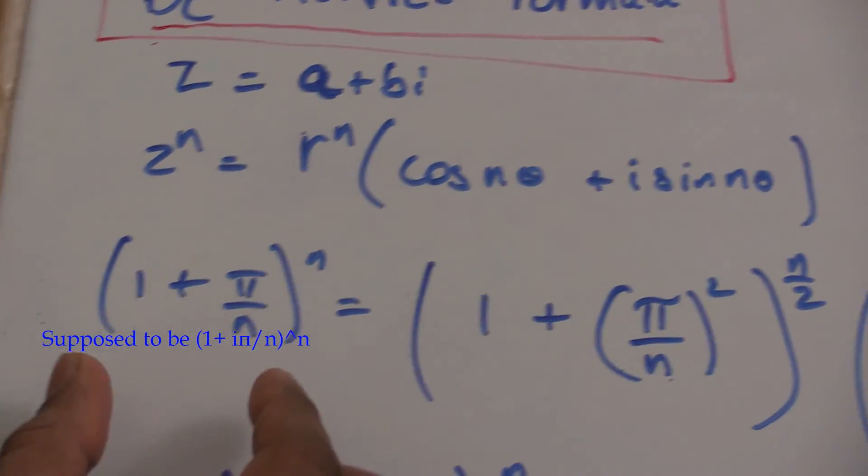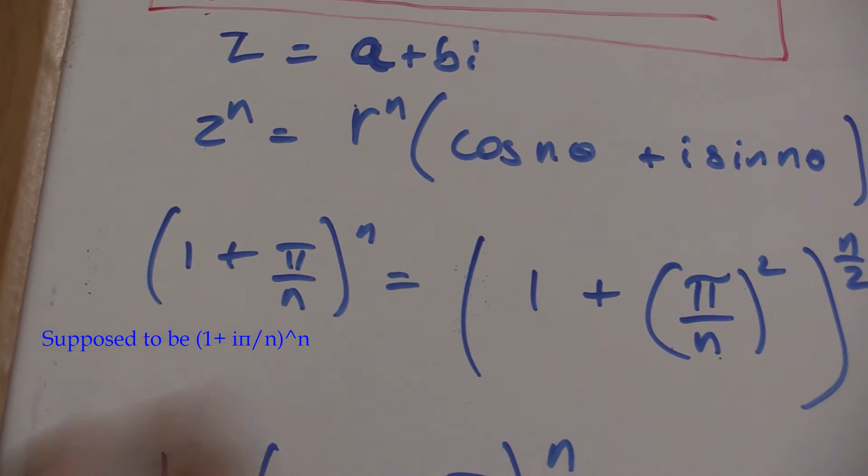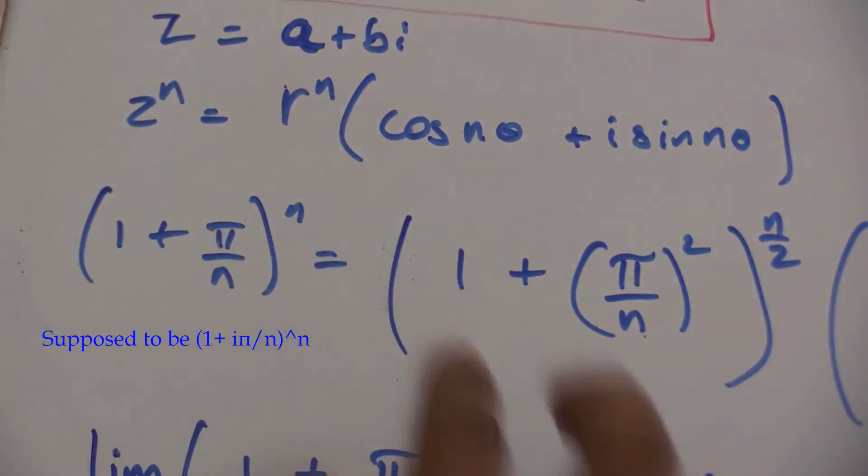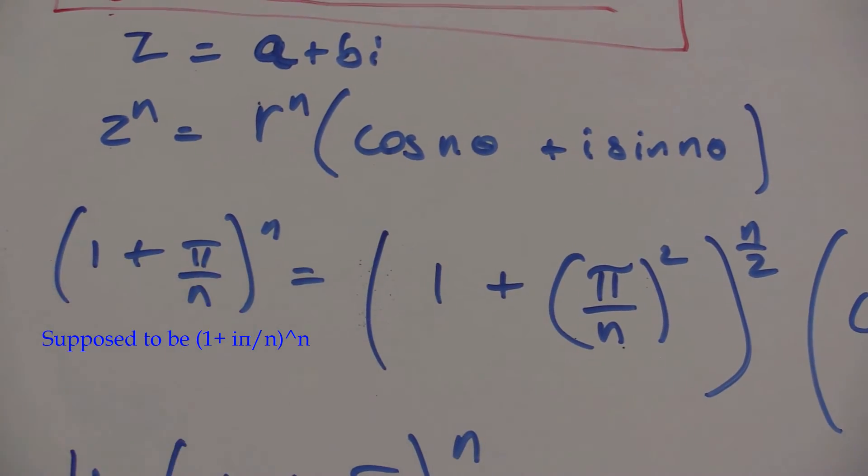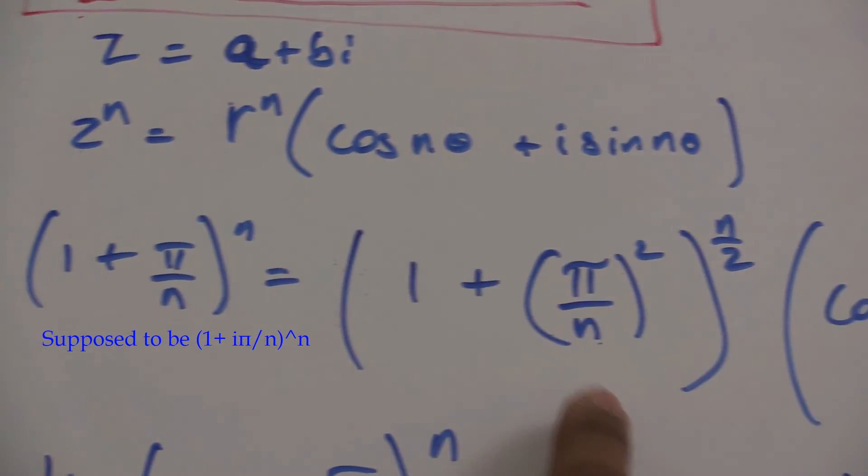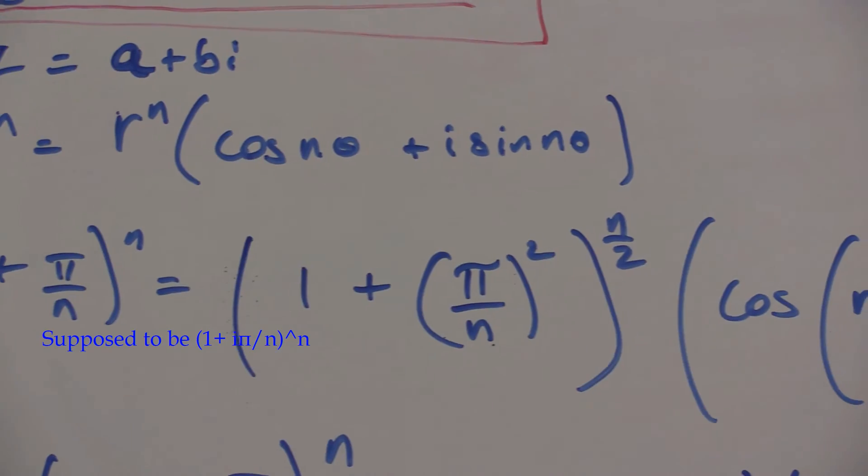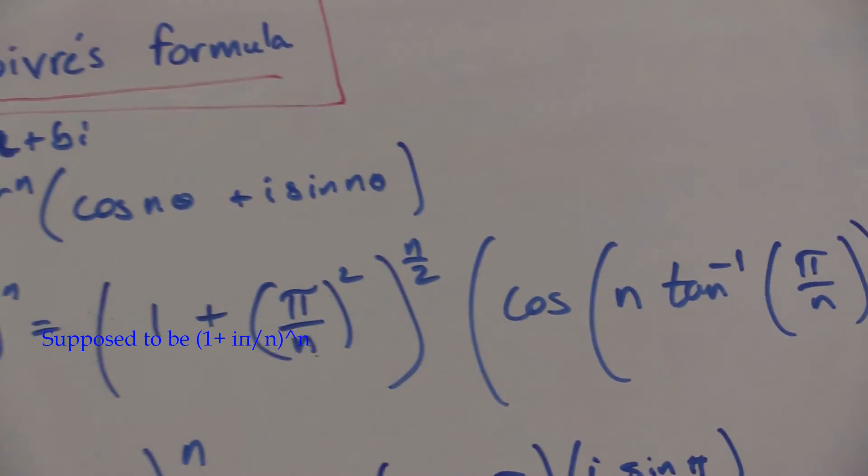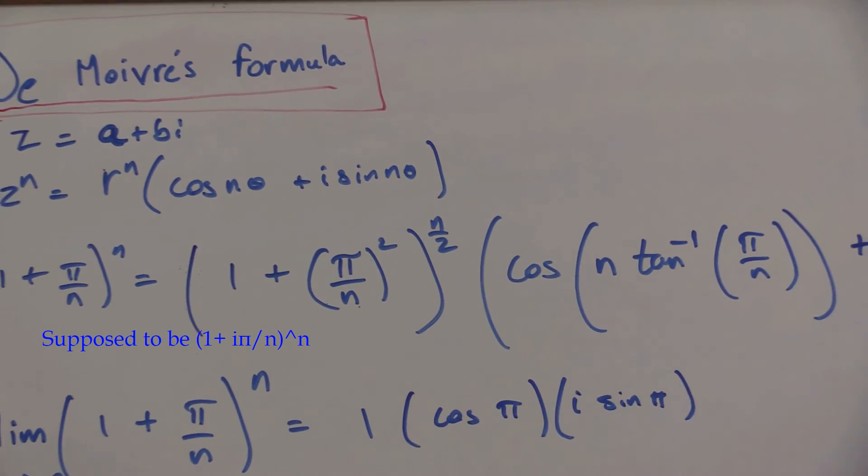In our case, we want to know 1 plus πi over n to the nth power. Writing this using De Moivre's formula in terms of 1 and π over n, I get 1 plus π over n squared to the n over 2 power and this whole equation right here. We want to know what happens when n goes to infinity.